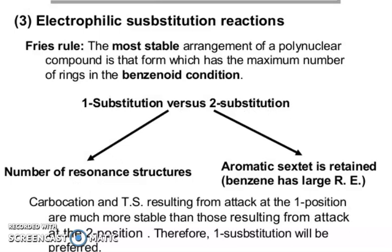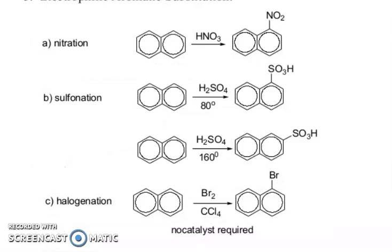Reactions of naphthalene — electrophilic substitution: Fries' rule states that the most stable arrangement of a polynuclear compound is the form that has the maximum number of rings in the benzenoid condition. One substitution versus two substitution: number of resonance structures — aromatic state is retained. Benzene has large resonance energy. Carbocations in the transition state from attack at carbon-1 are much more stable than from attack at carbon-2; therefore, C-1 substitution is preferred.